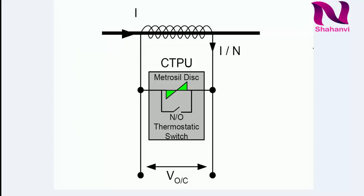My friends, now we will talk about its connection. The MetroCell current transformer protection unit should be connected across the secondary winding of a current transformer as close as possible to prevent it being inadvertently disconnected during maintenance.